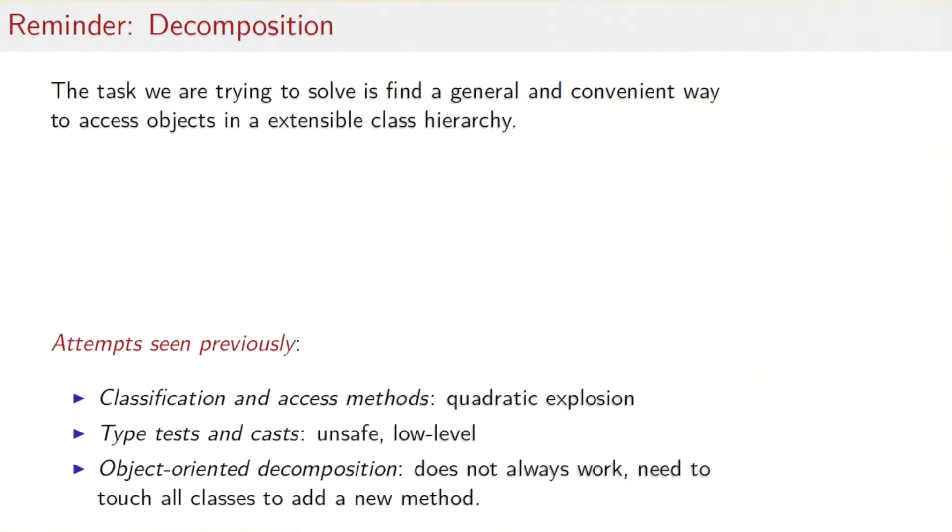So remember, the task we were trying to solve is find a general and convenient way to access objects in an extensible class hierarchy. The class hierarchy we were looking at was those of arithmetic expressions. We had a base trait expression and then we had subclasses for number and sum, and then later on we also added subclasses for product and variable to that. In terms of methods we were looking at eval, that would evaluate one of these expression trees yielding its results, as well as show, that would show a string representation of the expression tree, and then finally simplify, which would do some algebraic simplifications of an expression tree.